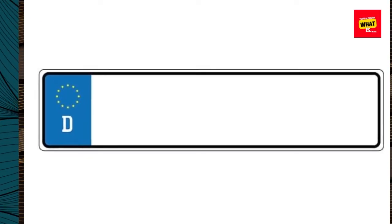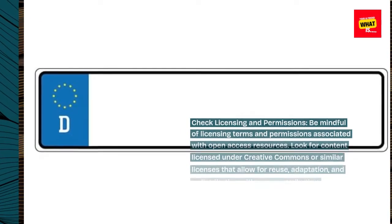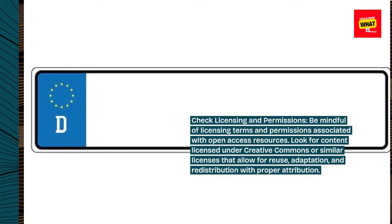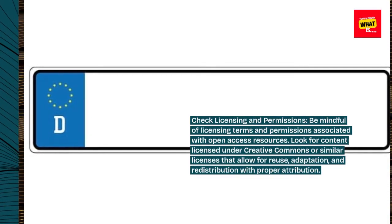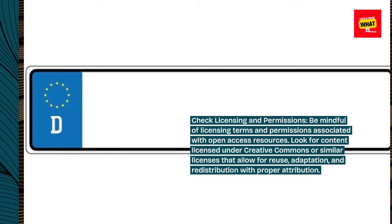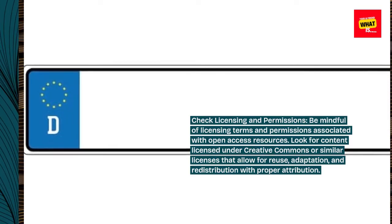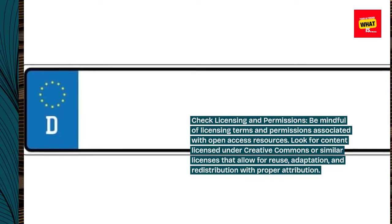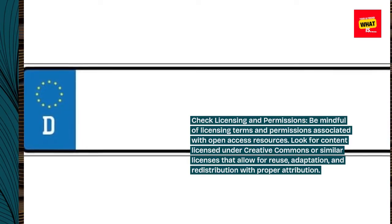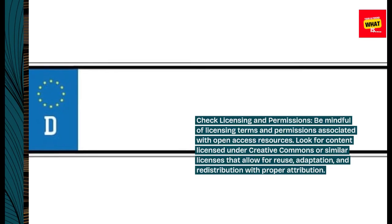Check Licensing and Permissions: be mindful of licensing terms and permissions associated with open access resources. Look for content licensed under Creative Commons or similar licenses that allow for reuse, adaptation, and redistribution with proper attribution.